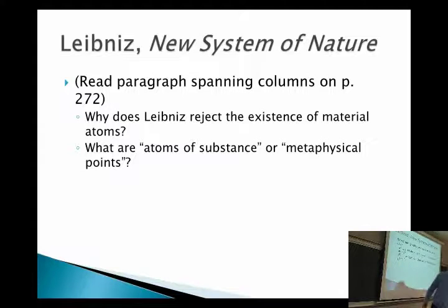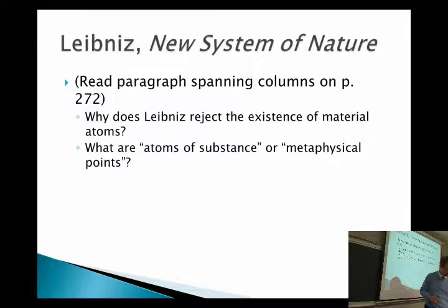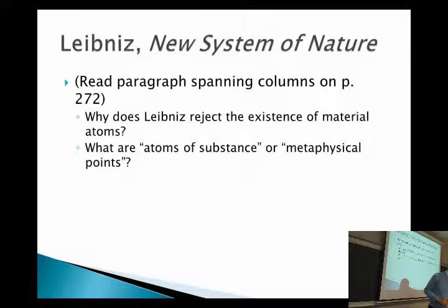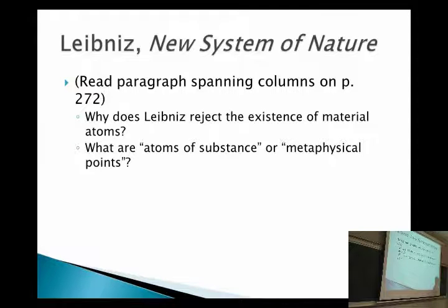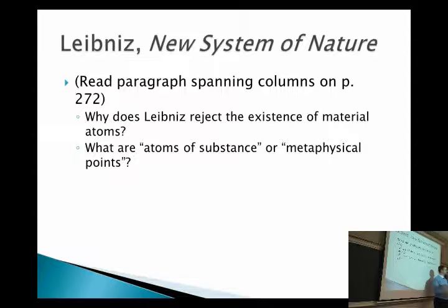Leibniz does not believe that there are what we would call material atoms. Does anybody remember one of the reasons he gives for rejecting material atoms? That's right — since matter can always be divided, if it has some kind of extension to it, then the most fundamental kind of thing must have no extension, and therefore not be material.